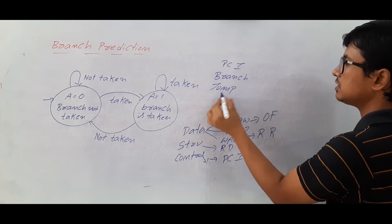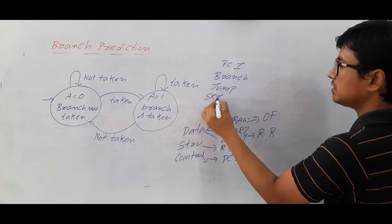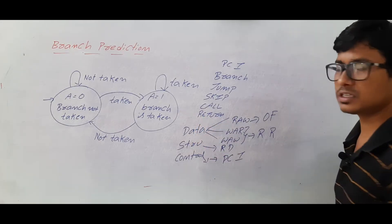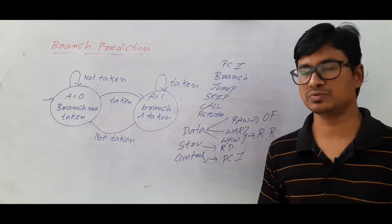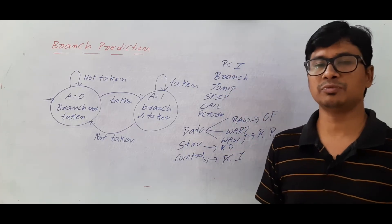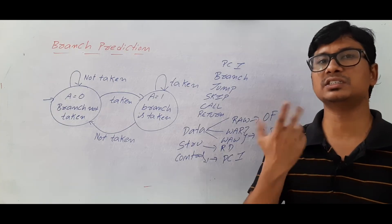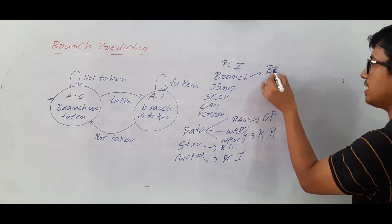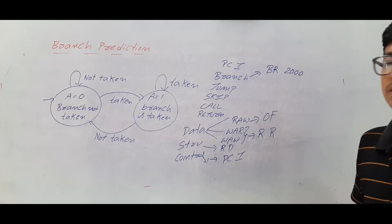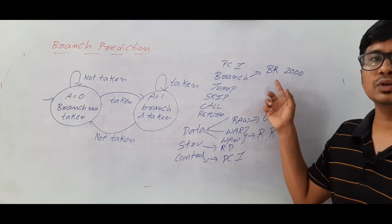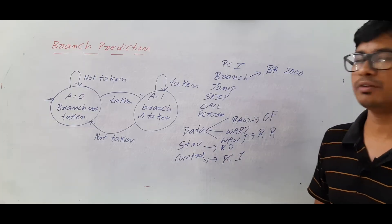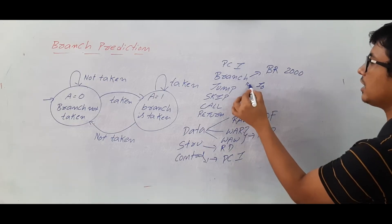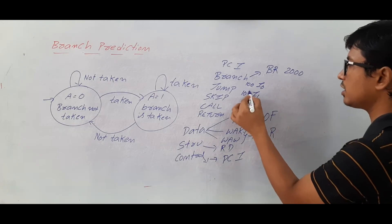Program control instructions include branch instructions, jump instructions, skip instructions, and call and return instructions. There are two types of branch instructions: conditional and unconditional. For an unconditional branch — for example, 'branch 2000' — the processor must fetch and execute the instruction at location 2000. Normally, instructions are sequential: i0 at location 100, i1 at 101, i2 at 102.